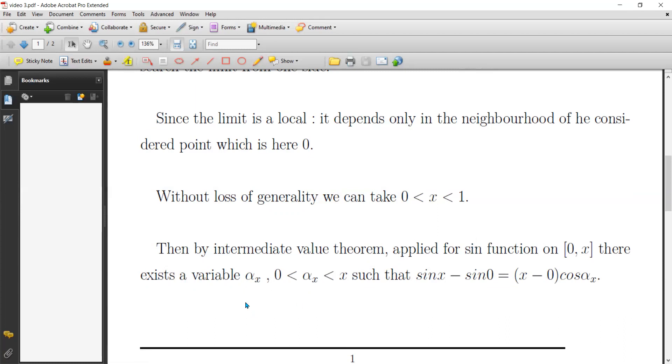Because the alpha depends on x, for this reason we write alpha which depends on x. But alpha x is between x and zero, such that sine x minus sine zero equals x minus zero cosine alpha x.